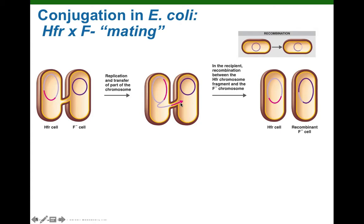Here we see the transfer occurring — this would be just half of the F factor. For the recipient to receive both halves of the F factor, an entire copy of the donor chromosome would have to be transferred before the second half of the F factor reaches the recipient. That usually takes about 90 minutes. Out in nature — say two E. coli in your intestine — there's so much movement, fluid, food, and feces that this delicate conjugation bridge is broken before transfer of both halves of the F factor is accomplished.